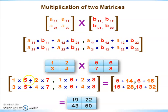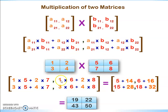For a numerical example: [1, 2; 3, 4] × [5, 6; 7, 8]. Row 1 × column 1: 1×5 + 2×7 = 5+14 = 19. Row 1 × column 2: 1×6 + 2×8 = 6+16 = 22. Row 2 × column 1: 3×5 + 4×7 = 15+28 = 43. Row 2 × column 2: 3×6 + 4×8 = 18+32 = 50. Final answer: [19, 22; 43, 50].